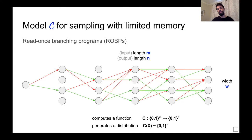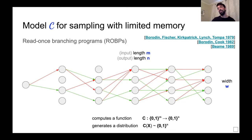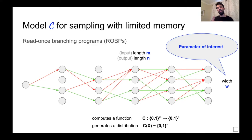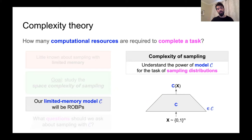This specification is very similar to multi-output ROBPs that were studied in the 70s and 80s. Our main parameter of interest will be the width W of the branching program. We won't be so concerned with the input length M, meaning how many random bits it will be allowed to use.